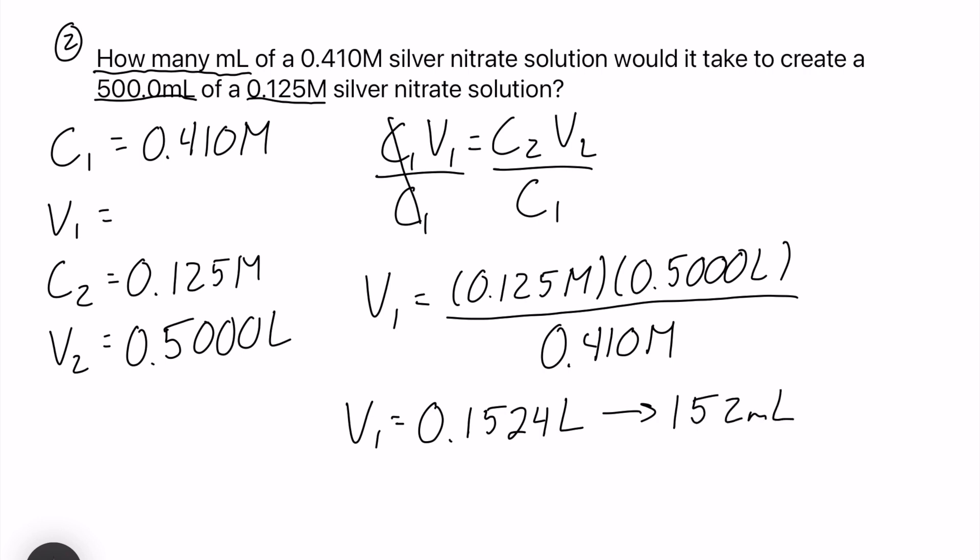You should have 152 milliliters and let's check sig figs here. It looks like we have three, four and three, so we can actually leave it as 152 milliliters as our volume one.